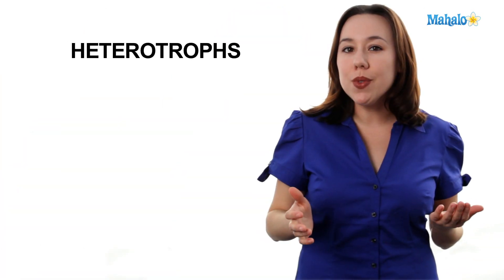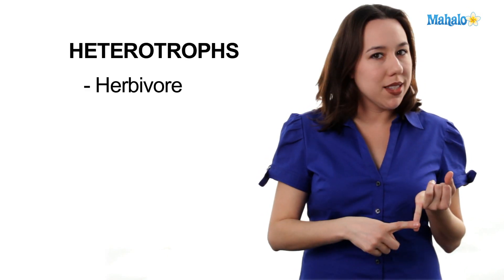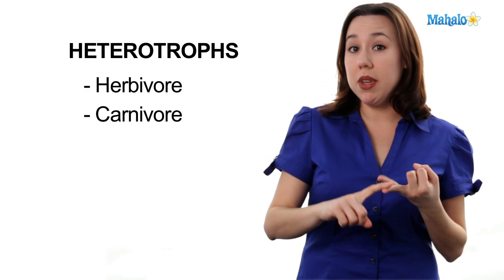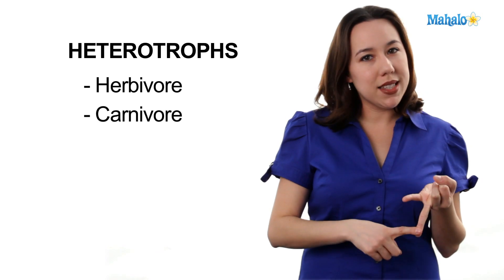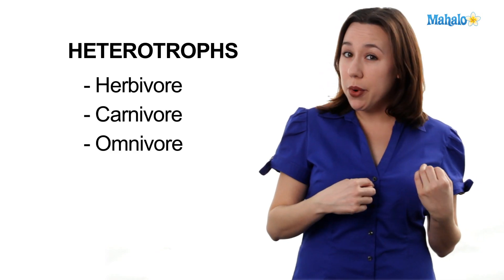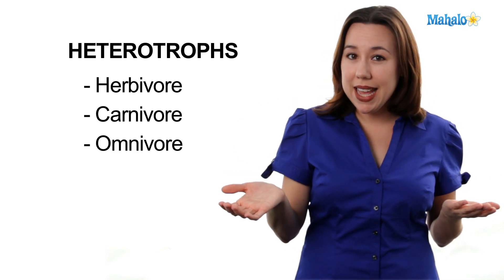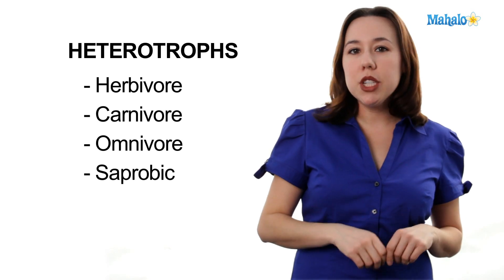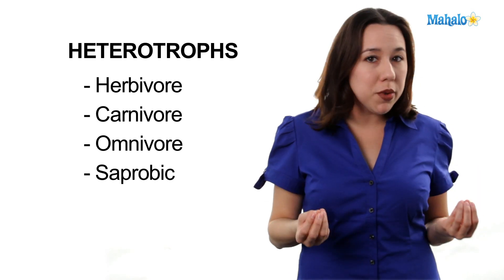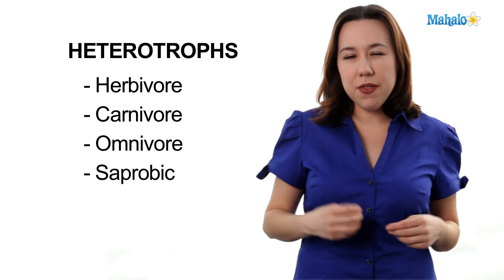Heterotrophs generally fall into one of four categories. You're either going to be an herbivore, which means you eat plants; a carnivore, which means you eat only meat; an omnivore, like us, which means you eat both plants and animals; or saprobic, which means you absorb your nutrition from the environment, like fungi.